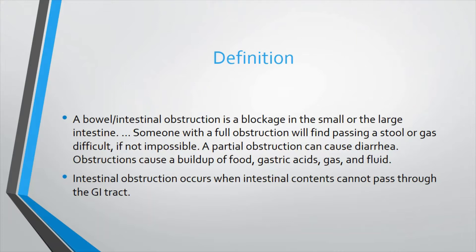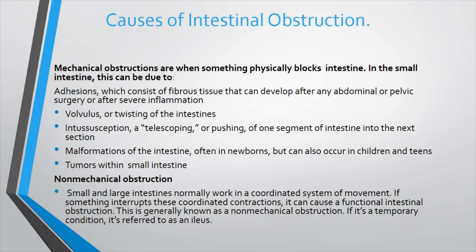The causes of intestinal obstruction include mechanical and non-mechanical types. In mechanical obstruction, the intestinal lumen is physically blocked. This includes adhesions — fibrous tissue that can develop after abdominal or pelvic surgery. Adhesion means fibrous tissue formation in the intestine, causing the lumen passage to be blocked. Severe inflammation caused by abdominal and pelvic surgery leads to this fibrous tissue formation.